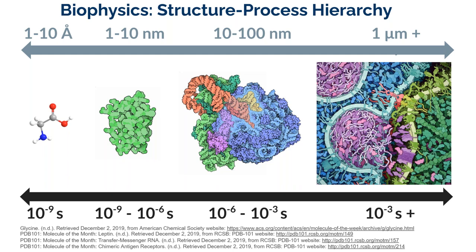On the next scale, we have a full protein — a polymer of amino acids that folds into a certain structure. The time and size scales involved in forming this structure range from nanoseconds to microseconds or even milliseconds. Then we can go into molecular assemblies of several distinct proteins or biomolecules, where dominant timescales are associated with molecular binding events, enzymatic activity, and cellular signaling.